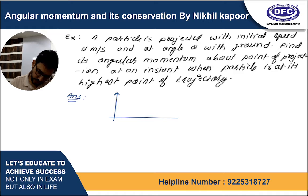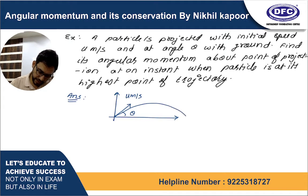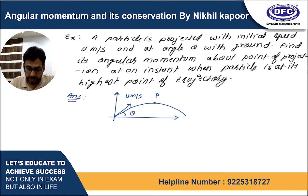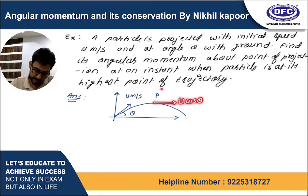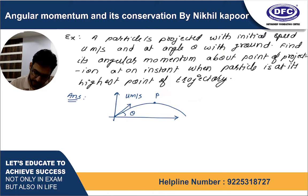So we throw the particle at u meters per second at angle theta. We need to look at the particle at maximum height. At the highest point, the particle's velocity component is horizontal — the vertical component is zero. So at maximum height, the horizontal velocity component is u cos theta and vertical component is zero.